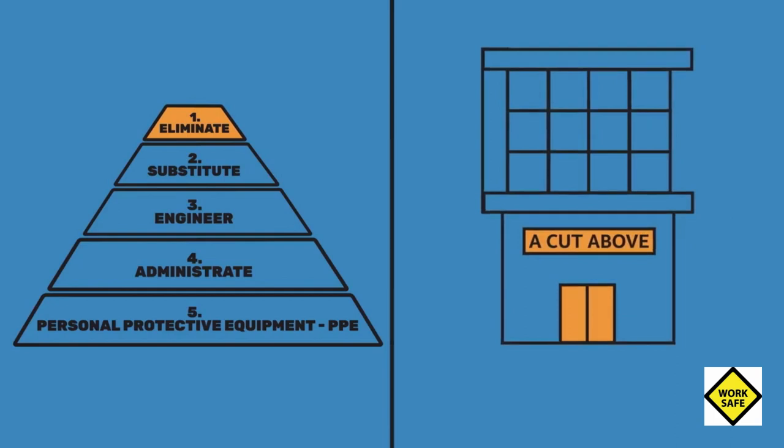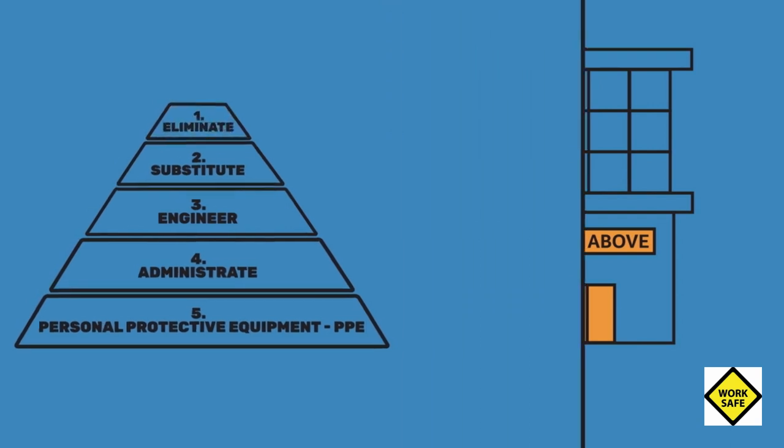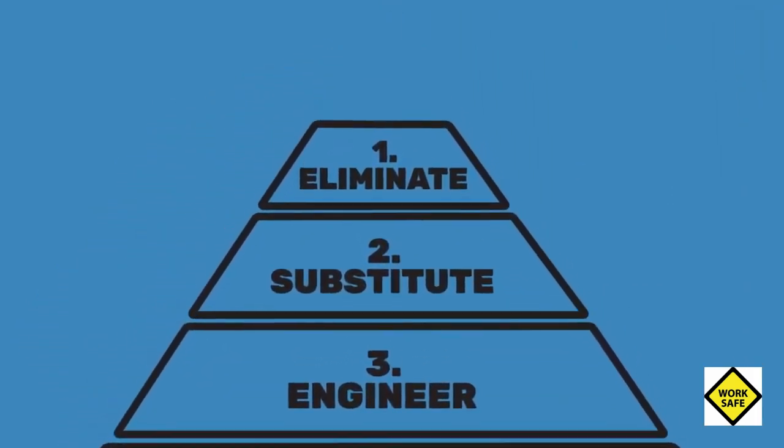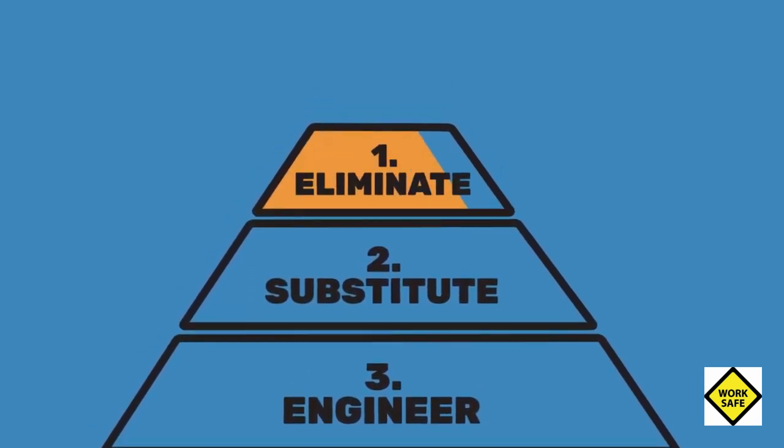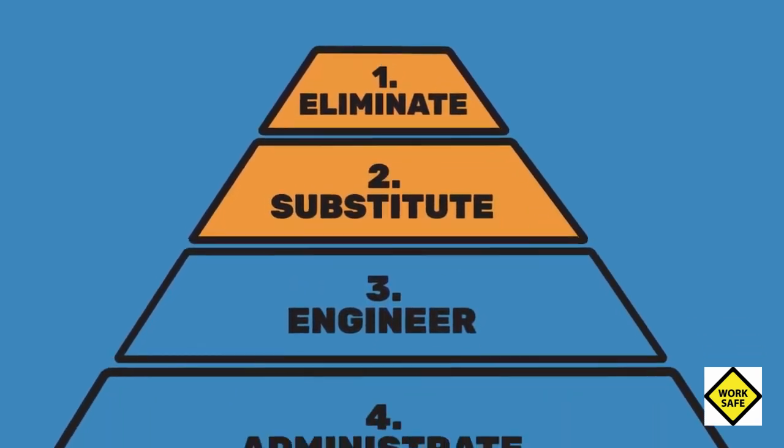Here's the best way to think of the Hierarchy of Controls. Always aim high in the pyramid. Jobs should be designed to have as few hazards as possible, with the need for personal protective equipment being the last resort.